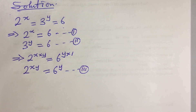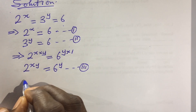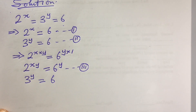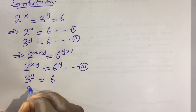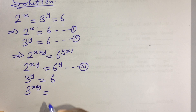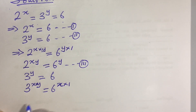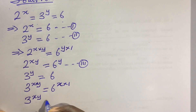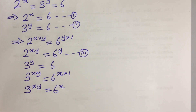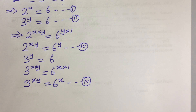Now we look at equation 2 and multiply the exponent by x. Equation 2 says 3 to the power of y equals 6. Multiplying the exponent by x gives us 3 to the power of xy equals 6 to the power of x, since the right-hand side exponent is 1 times x. We end up with 3 to the power of xy equals 6 to the power of x. Let's label this equation 4.